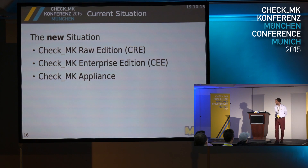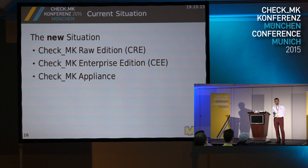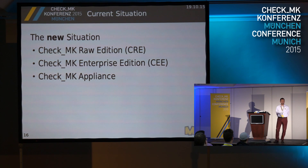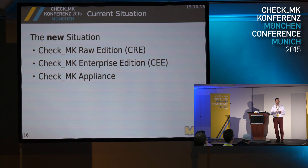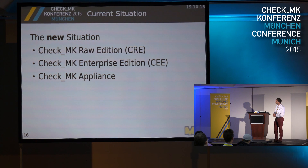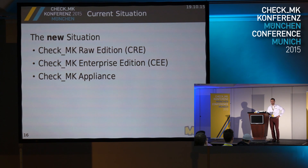The new situation is a lot simpler — we now only have three options. The Raw Edition is the open source version that everybody can use free of cost, with OMD as a basis. It's very easy to update and install, replacing the packages of omdistro.org, and it doesn't need manual setup. Then we have the Enterprise Edition — that's the packages from the subscription, which we already had but was called differently. These two versions are now parallel with the same version number, and Lars is going to tell you more about the CheckMK appliance.